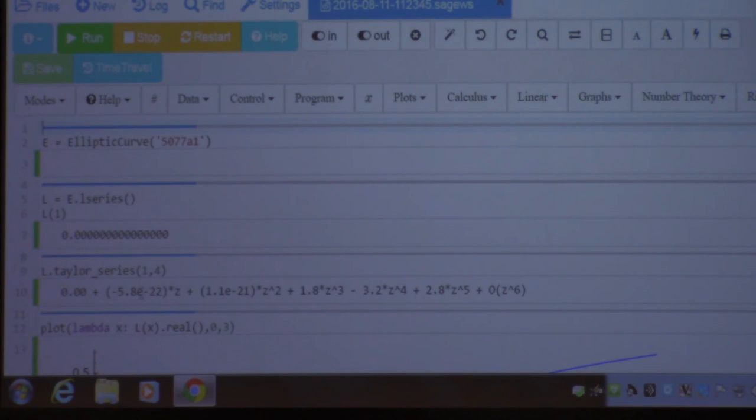There is a 0 of order of 1. Not so much, invariably not so much, because this is, the coefficient is 10 to the minus 22. So, it's probably a 0. This is probably a 0, and the first non-zero coefficient is 1.8, and it goes with z cubed. So, it indicates that there should be a 0 at s equals 1.